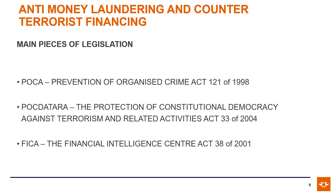The main pieces of legislation for anti-money laundering are: first, the POCA Act — Prevention of Organised Crime Act 121 of 1998. Then you have the POCDATARA Act — the Protection of Constitutional Democracy Against Terrorism and Related Activities Act No. 33 of 2004. And lastly, the FICA Act — the Financial Intelligence Centre Act 38 of 2001.